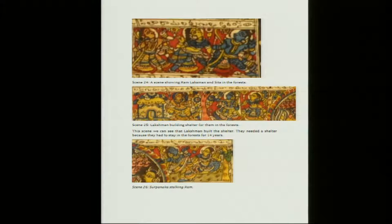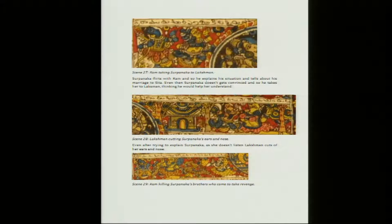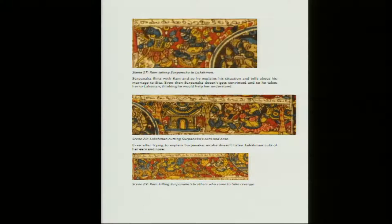Then appears Surpanakha, who started stalking Ram — Surpanakha was the sister of Ravan, the demon whom we saw at the swayamvara of Sita who was refused and could not win Sita. Ram takes Surpanakha to Lakshman: Surpanakha flirts with Ram so he explains his situation and tells about his marriage to Sita. Even then Surpanakha does not get convinced, so he takes her to Lakshman thinking he would help her understand. Even after trying to explain, as she does not listen, Lakshman cuts off her ears and nose.